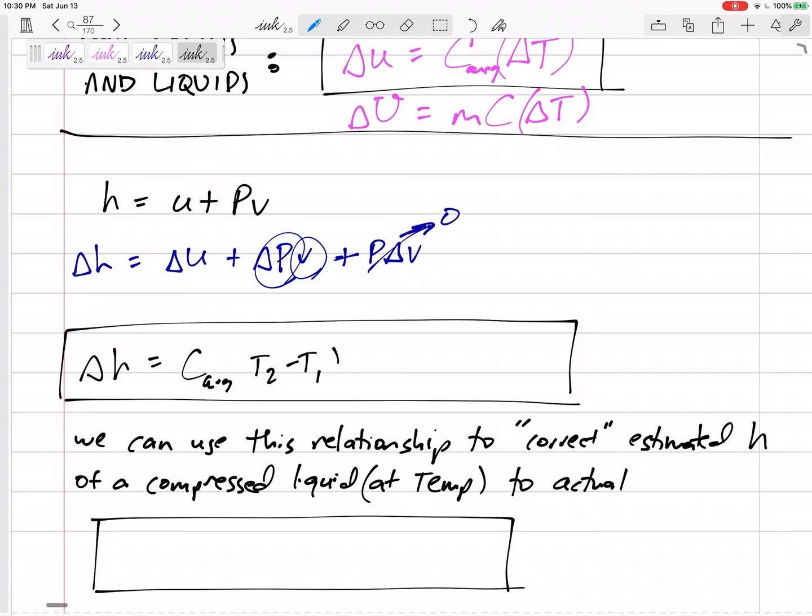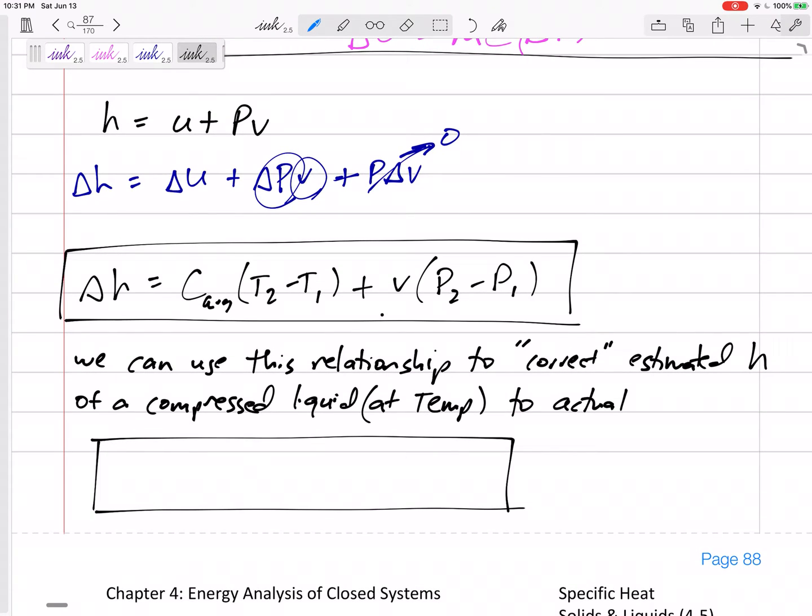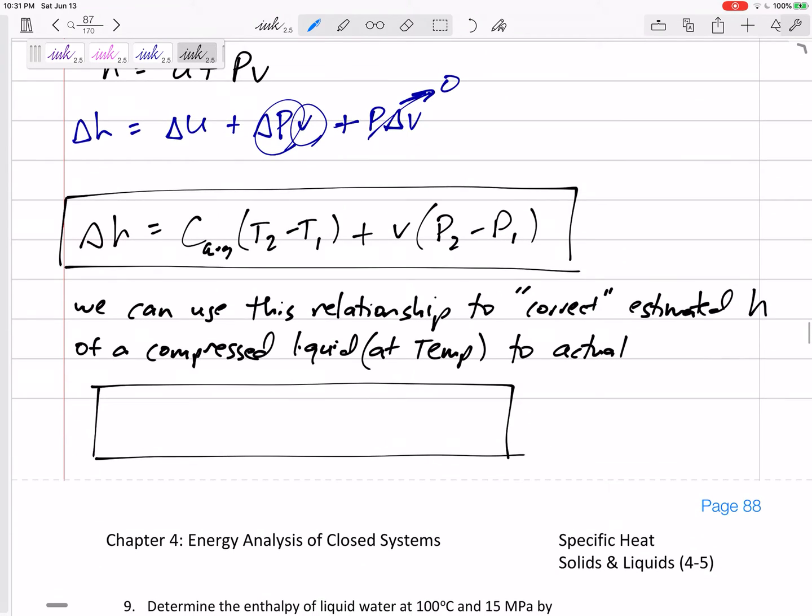T2 minus T1. But sometimes you might want to correct it with this kind of a correction term if you have a very large change in pressure. So if this is very small or this is very small, then that term is negligible, but if we want to be more precise or if we want to just calculate that just to see if it changes much, then we can say the delta h is C delta T plus v delta P.